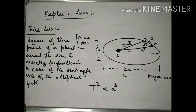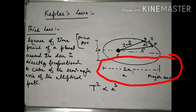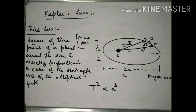Kepler's third law states that the square of the time period of a planet around the sun is directly proportional to the cube of the semi-major axis of the elliptical path: T² ∝ a³. Here 2a is the major axis, so a is the semi-major axis. Let's prove it.